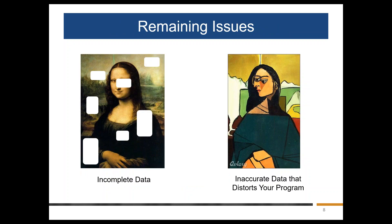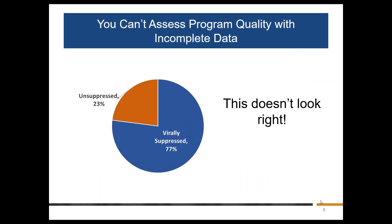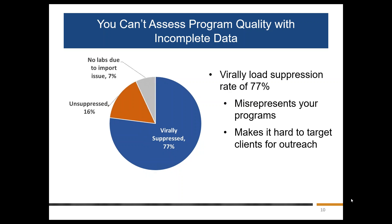All that said, there's always room for improvement. Some of you may still struggle with incomplete or inaccurate data, which means your data aren't reflecting your masterpiece of a program. You can't assess program quality with incomplete or inaccurate data. For example, say you run a performance measure report and see that about 23% of your clients are not virally suppressed. When you dig a little deeper, you find that you're actually missing 7% of viral load values due to an import issue from your lab system to your electronic health record system. Once you fix this data quality issue, you know exactly who's not virally suppressed and can target your outreach to those individuals.